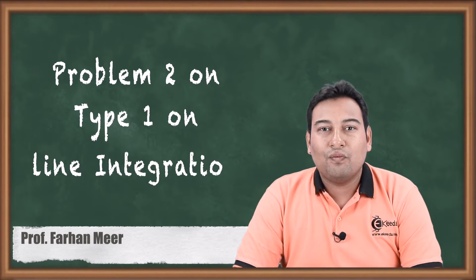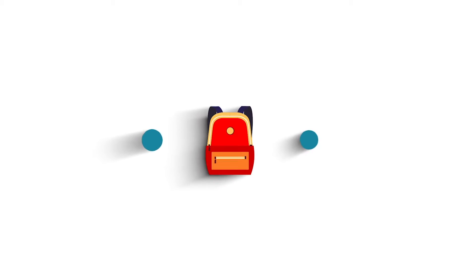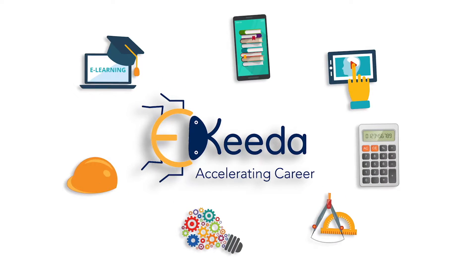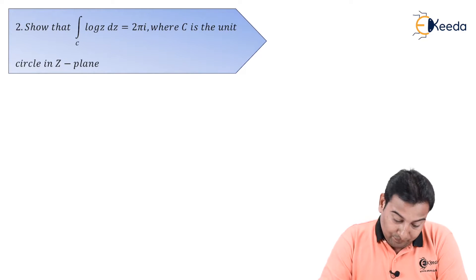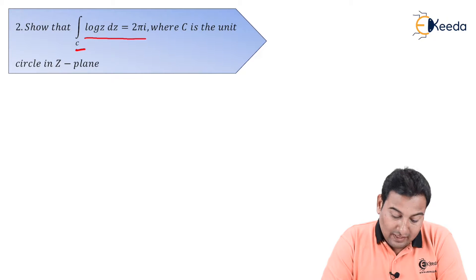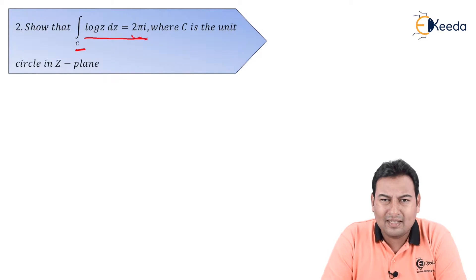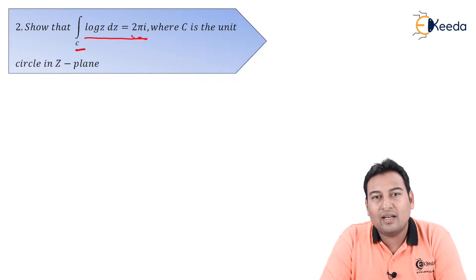Hello friends. In this video we'll be discussing one more example on line integration type 1, closed curve — example number 2. The question is: evaluate the integral of log z dz along C, and it is asked to prove the result is 2πi, where C is the unit circle in the z-plane.